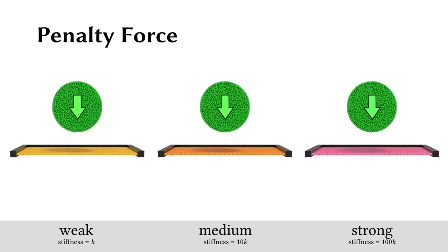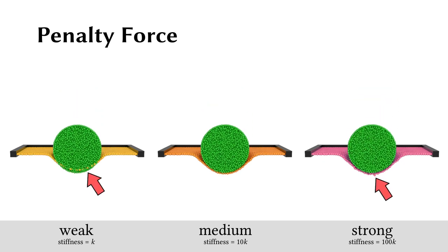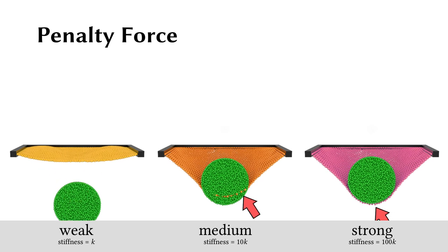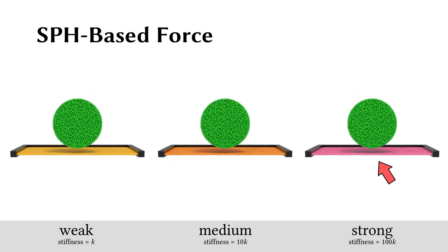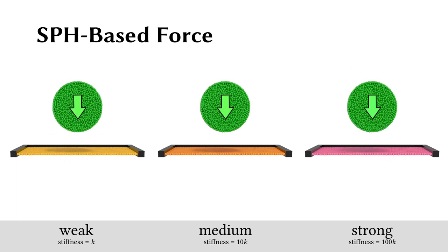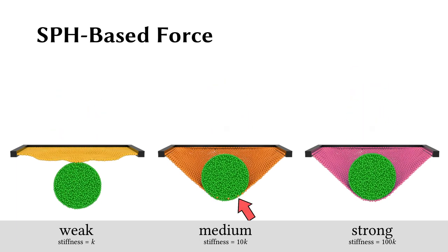However, if we give some initial velocity to the ball, a stronger stiffness is needed to avoid penetration. The same story holds using an SPH-based force formulation, where stronger stiffness is unstable but needed when we have high velocity impact.